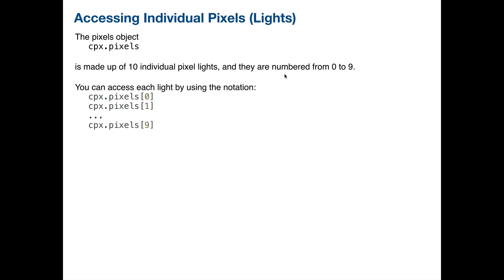We're going to refer to those individual pixels — the very first one is zero and the tenth one is nine — by putting the number inside of square brackets. This is actually referred to as an array. What we're saying is that pixels has a bunch of different elements inside of it — 10 elements numbered zero to nine — and we can refer to each individual element, which is each individual light, by a number inside square brackets. Make sure you're using square brackets, not curly brackets or parentheses.